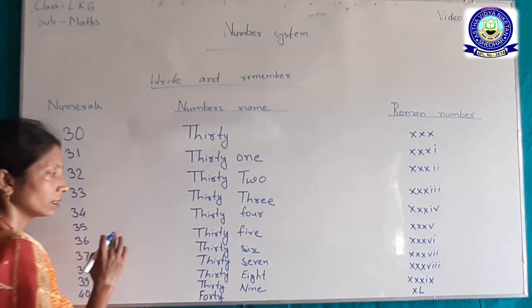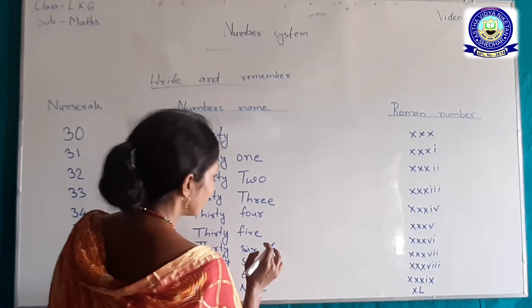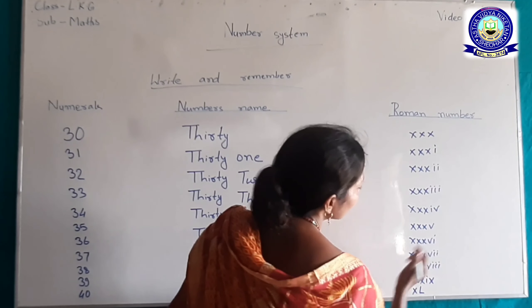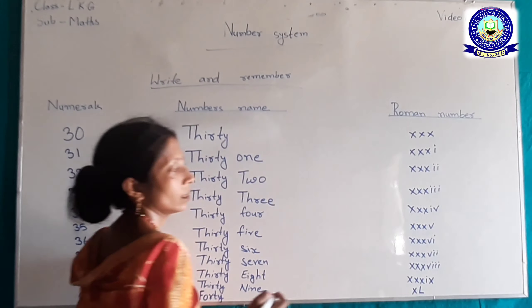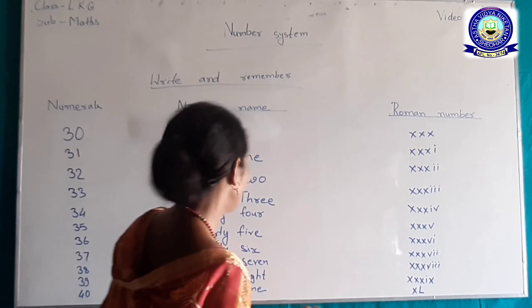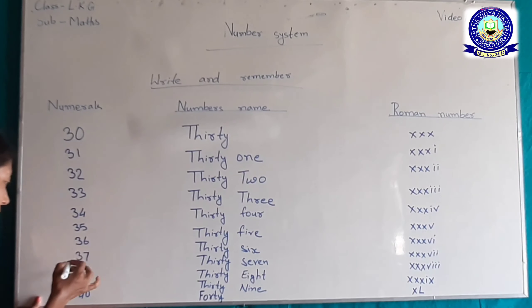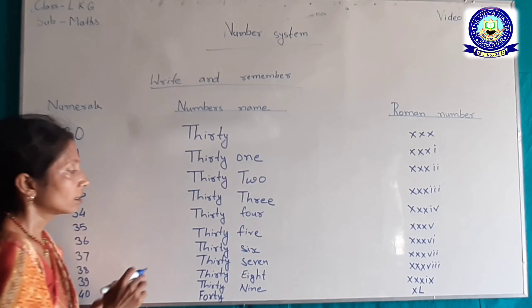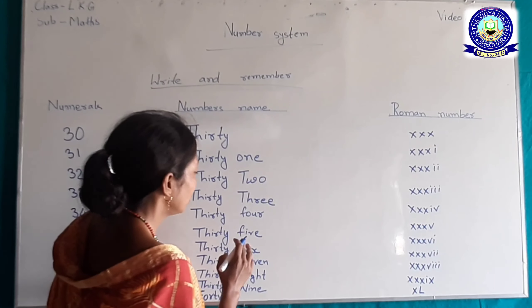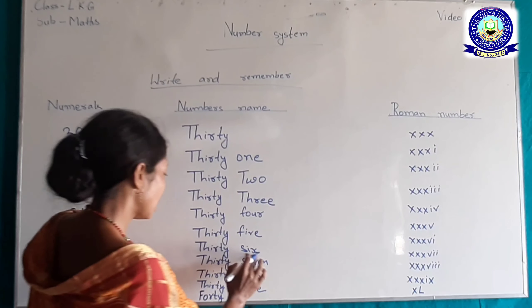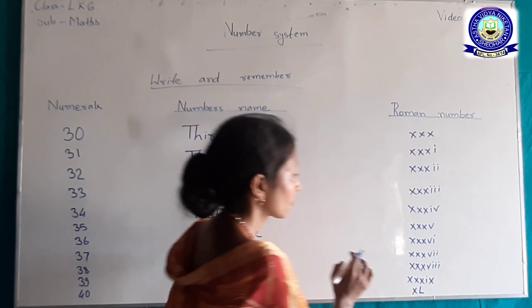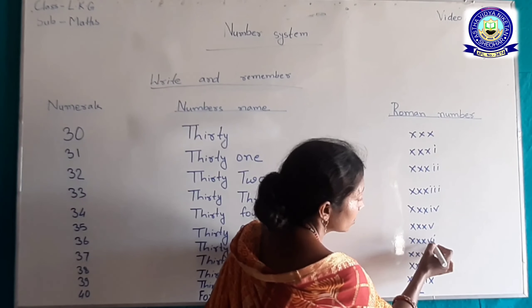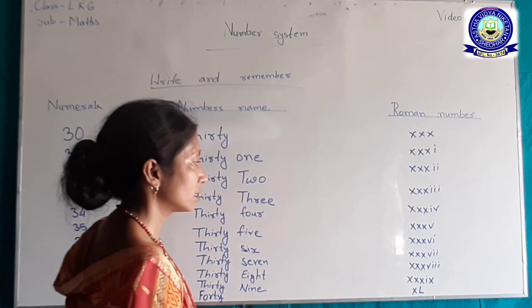35 — T-H-I-R-T-Y F-I-V-E, 30 plus 5, Roman number Triple X V (XXXV)। 36 — T-H-I-R-T-Y S-I-X, 30 plus 6, Roman number Triple X V I (XXXVI)।